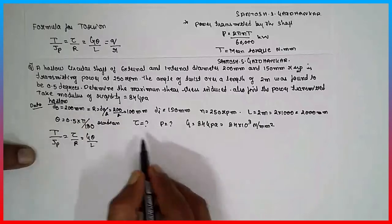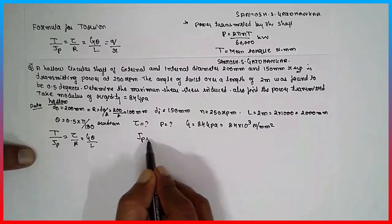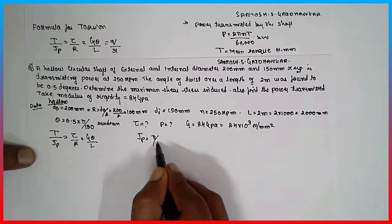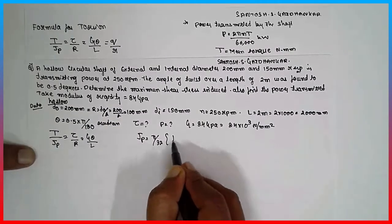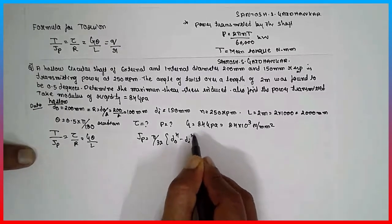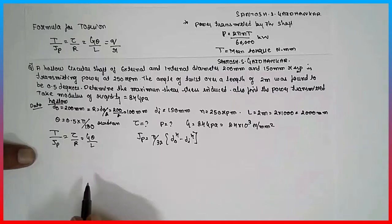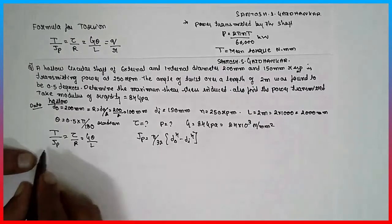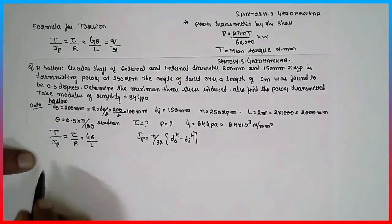These two. This is the hollow part. For hollow, the polar moment of inertia will be pi divided by 32, D₀ raised to 4 minus D₁ raised to 4. This is the formula for polar moment of inertia. If it is a hollow section, I have to use these two combinations.